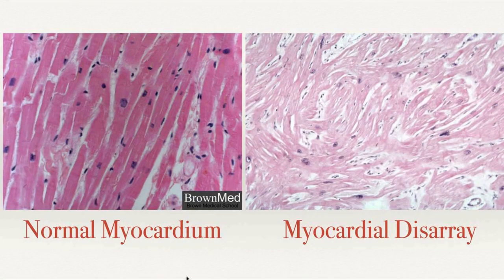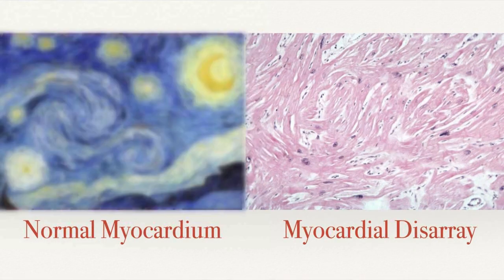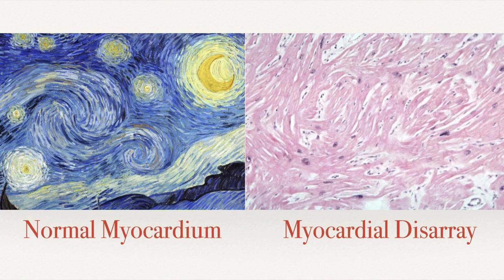At the histological level, on the left you see normal myocardium with myocytes organized in a linear fashion, which helps with the overall function of the left ventricle. In hypertrophic cardiomyopathy, you have this myocardial disarray — this disorganization of the myocardium. Dr. Chau mentioned it looks like Van Gogh's Starry Night, and if you put them next to each other, they actually do look pretty similar.